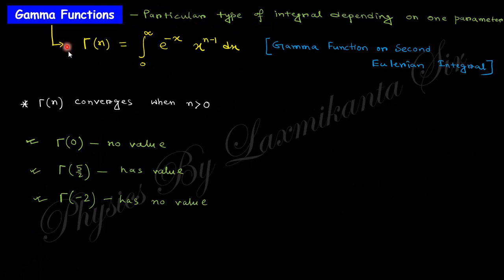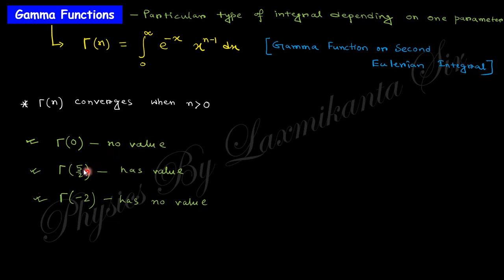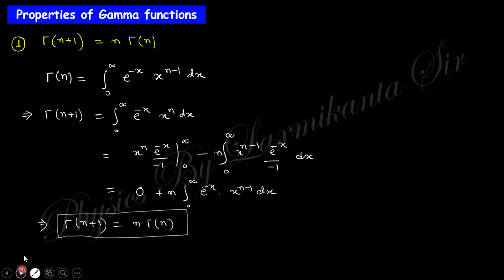Next is the gamma function, which is a single-parameter function. Gamma(n) is defined as the integral from 0 to infinity of e^(-x) x^(n-1) dx. This is known as the gamma function or the second Eulerian integral. You must remember that n must be greater than 0 — not equal to 0, strictly greater than 0. So n = 0 has no value, and n = -1/2 has no value.